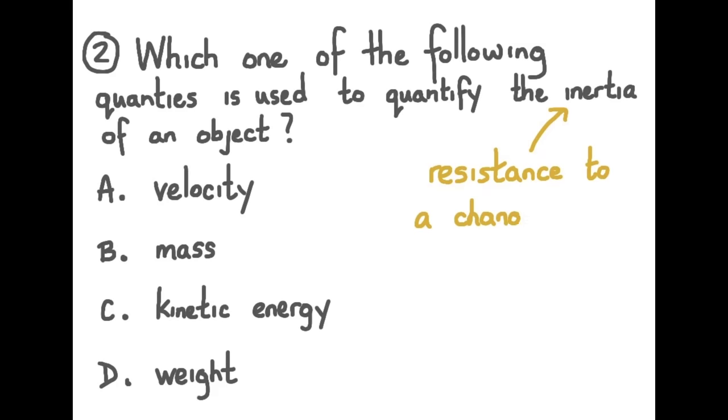Remember, inertia is the resistance to change in motion. So an object that has a lot of inertia, it's difficult to change its motion. And the quantity that measures inertia is mass. Our answer is B. Remember, weight is the force due to gravity measured in newtons. Quite different than mass.